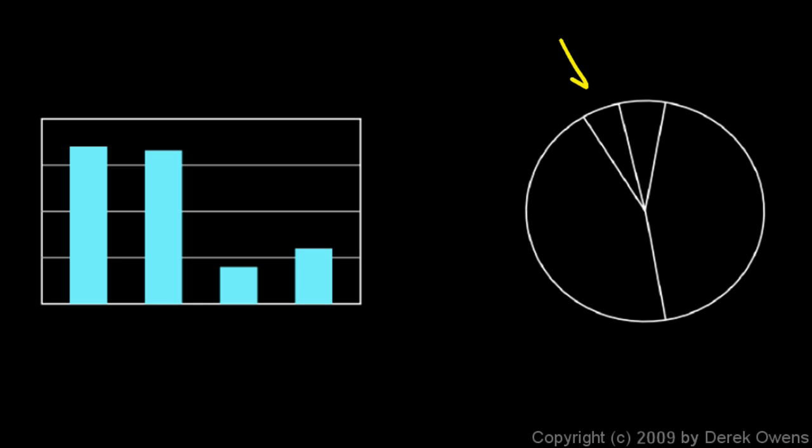Now I want to compare a bar graph to a circle graph, or pie chart. These two graphs serve different purposes. When two quantities are close in size, the difference is easy to discern on a bar graph — you can clearly see one bar is just a little larger than another. That's nearly impossible to do on a circle graph, where it's very difficult to tell which sector is larger.